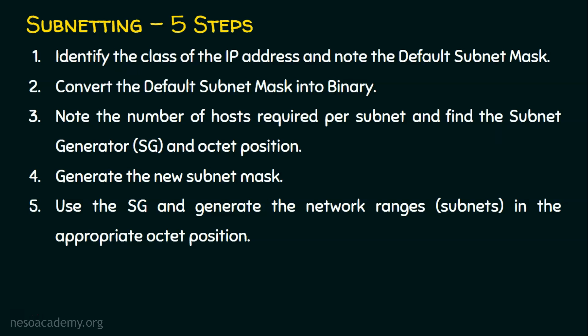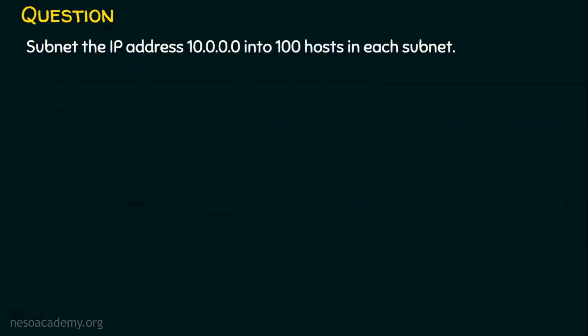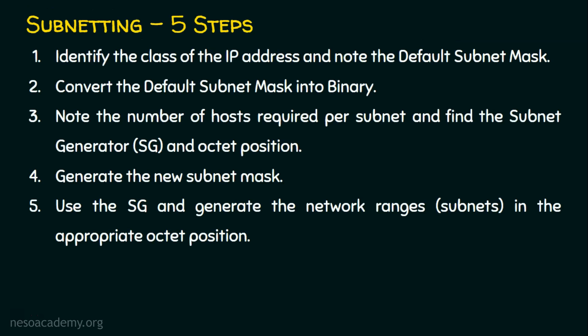Let's dive into the question. The question is: subnet the IP address 10.0.0.0 into 100 hosts in each subnet. We are given a class A IP address and are required to subnet it into 100 hosts per subnet. Let's solve the problem with the same five-step approach.